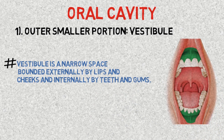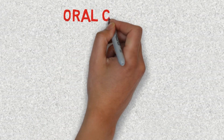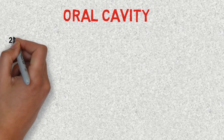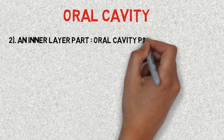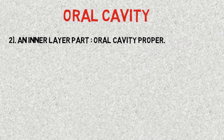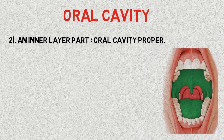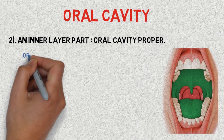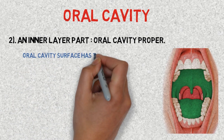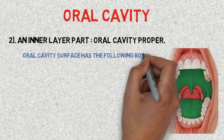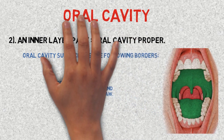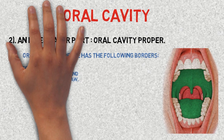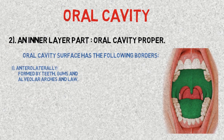The oral cavity proper is divided superficially into five parts. We can see the oral cavity proper highlighted in green. The first part — anterolaterally — is formed by the teeth, gums, and alveolar arches. The second part, the roof, is formed by the hard and soft palate.